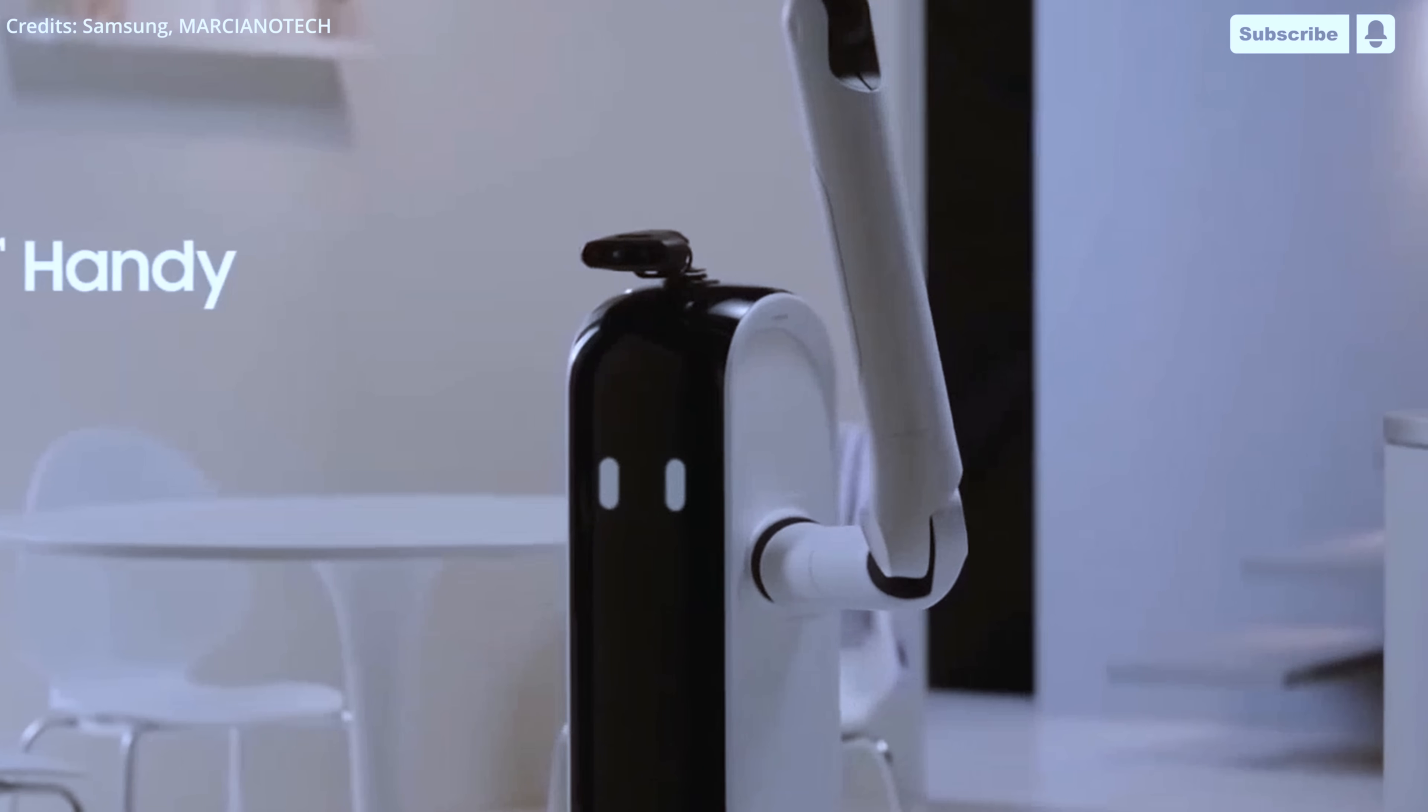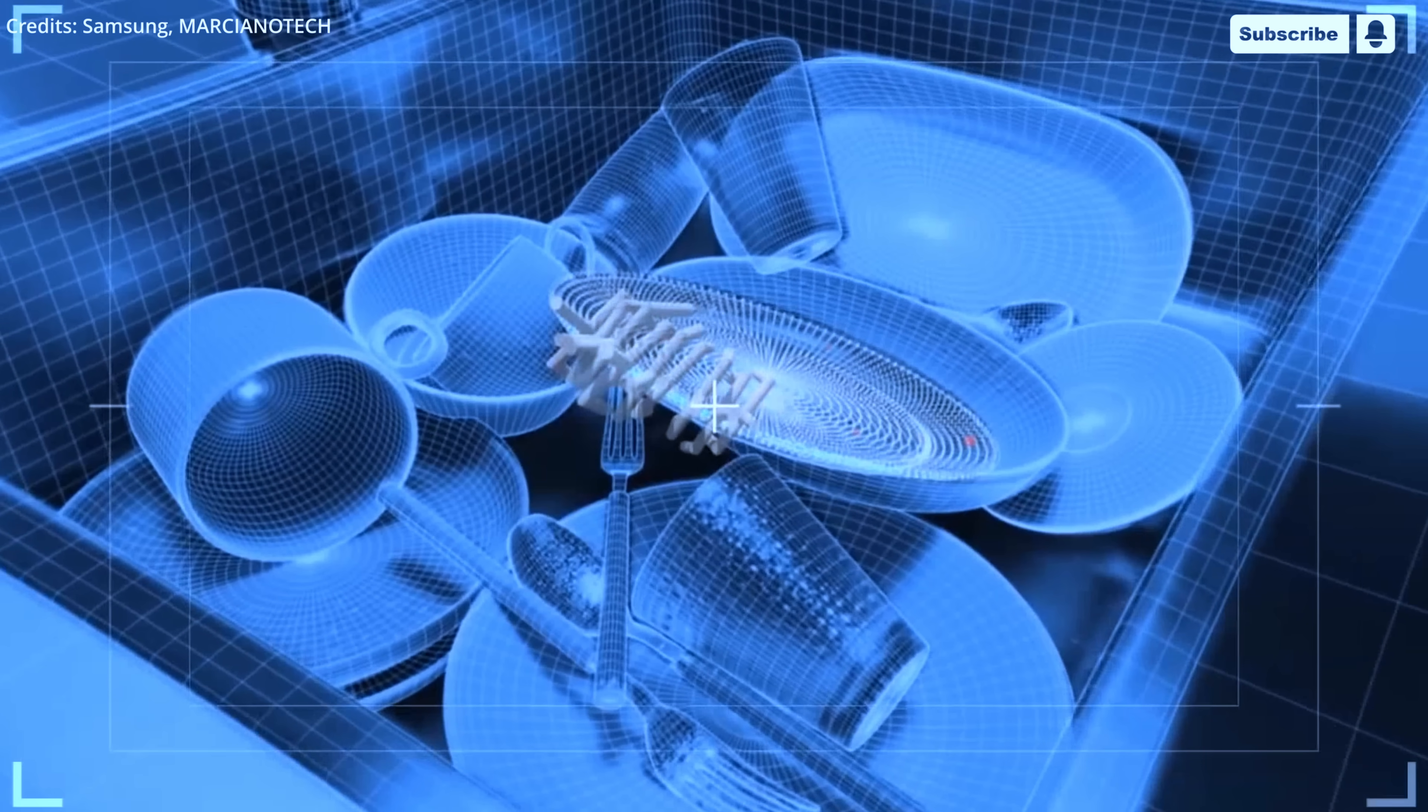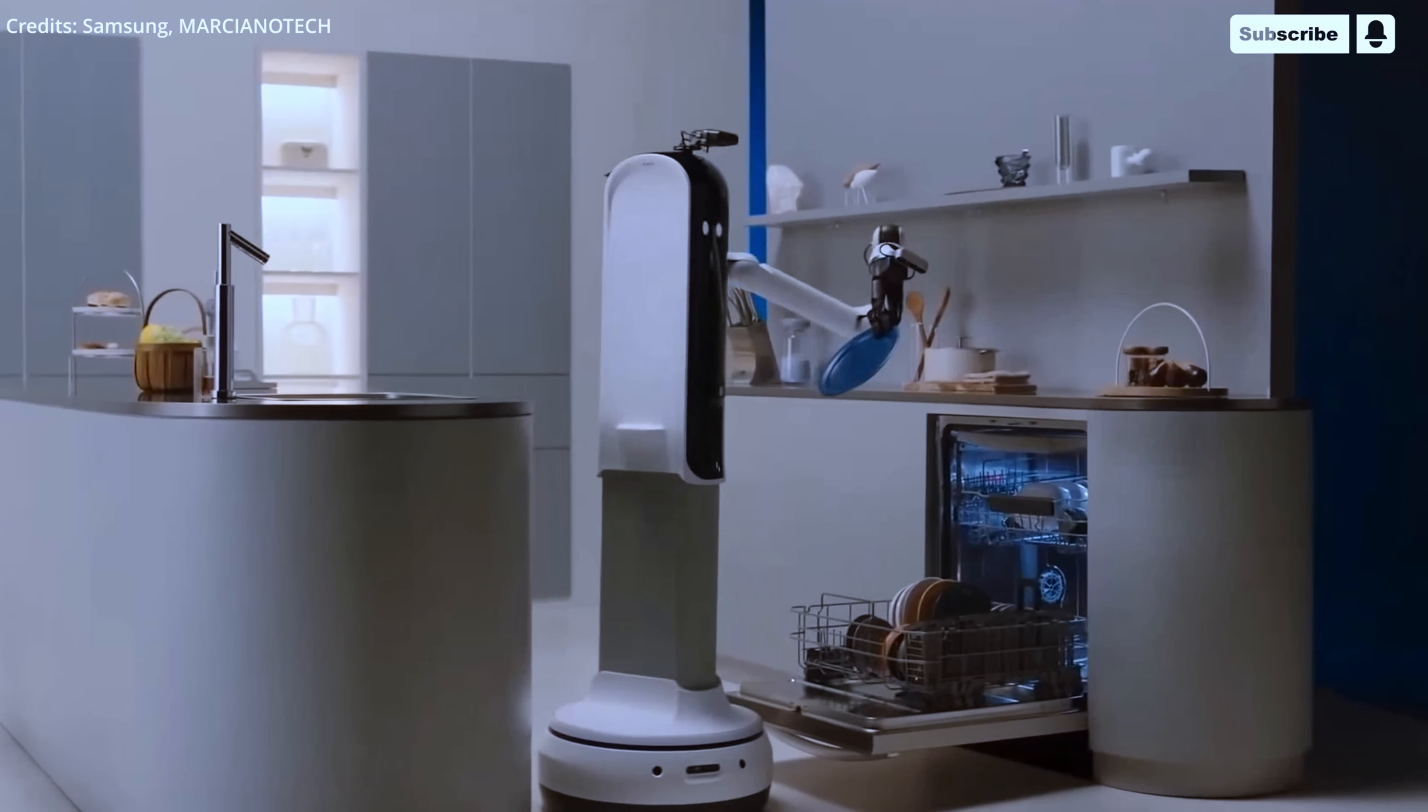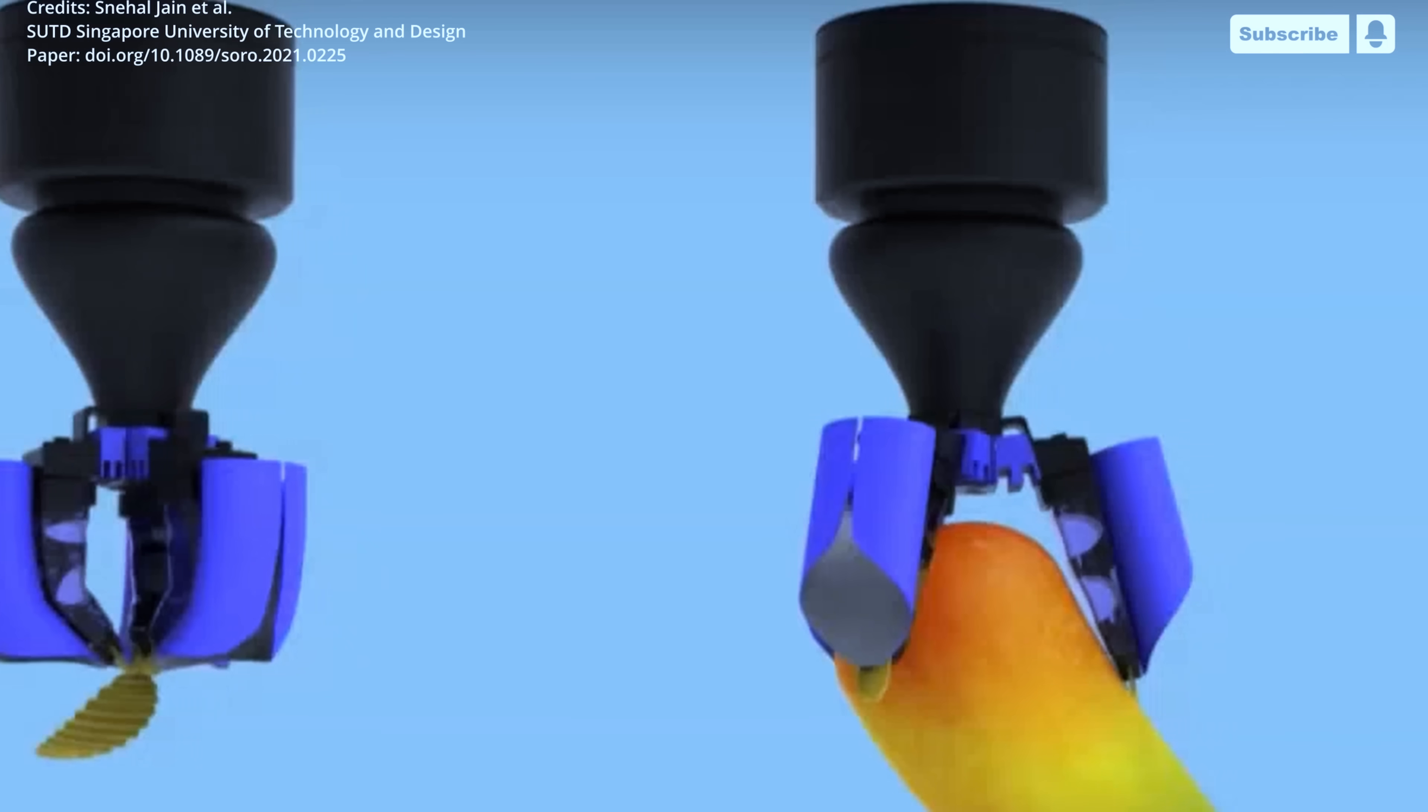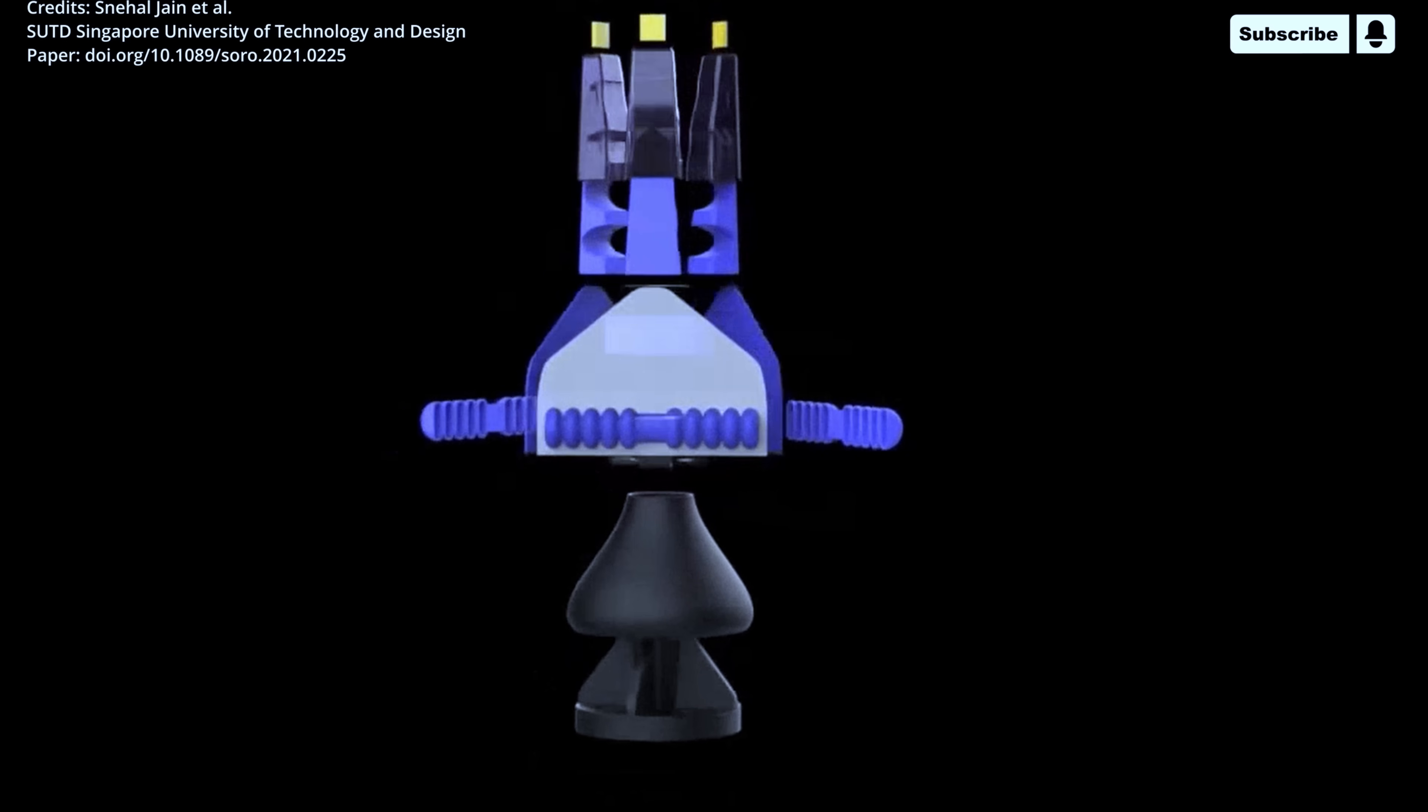Advancements in assistive robots like Samsung's X1 are being matched by innovative designs for robotics grippers. One such example is a new reconfigurable workspace soft robotic gripper that's shaped like an elephant's trunk.